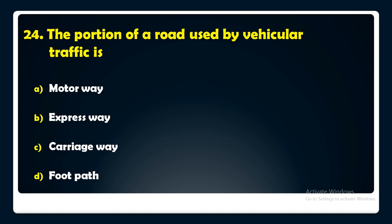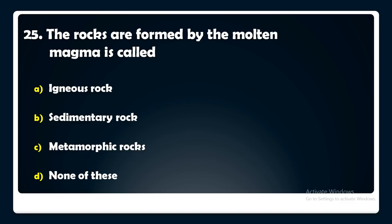The rocks formed by molten magma are called — igneous rock, sedimentary rock, metamorphic rock, or none of these?